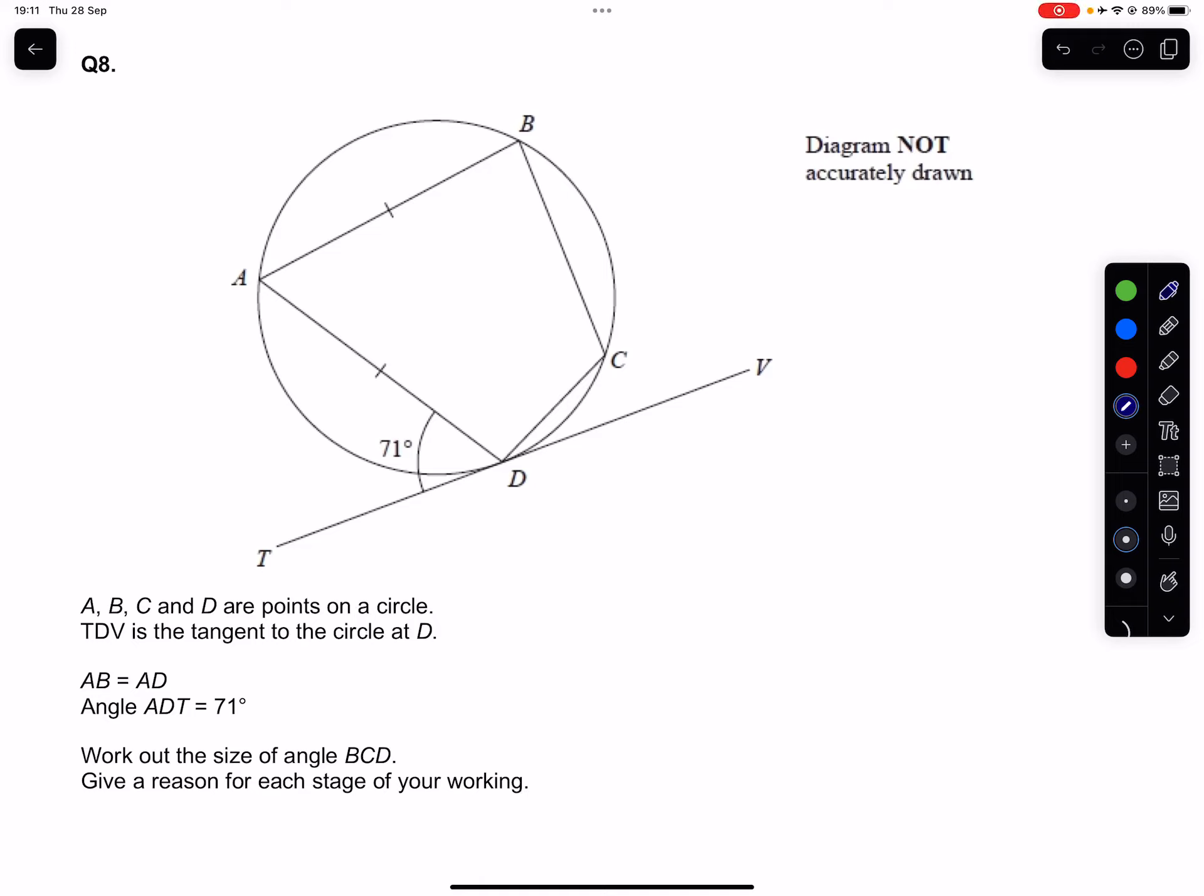Question 8. A, B, C and D are points on a circle. We are told that the line TDV is a tangent to the circle at D, and we've been given the angle 71 degrees like so.